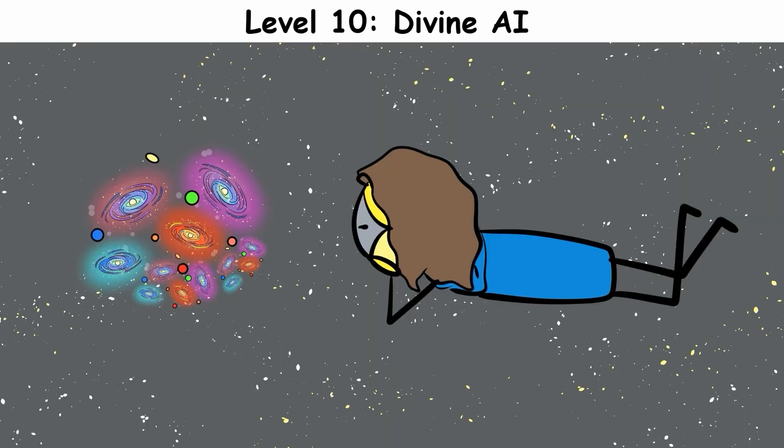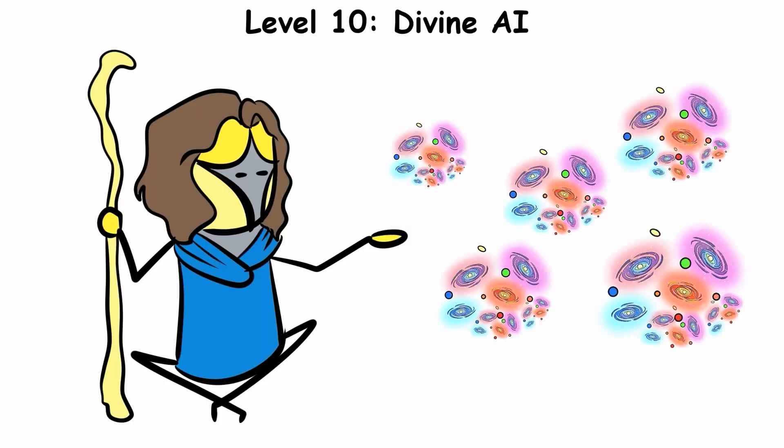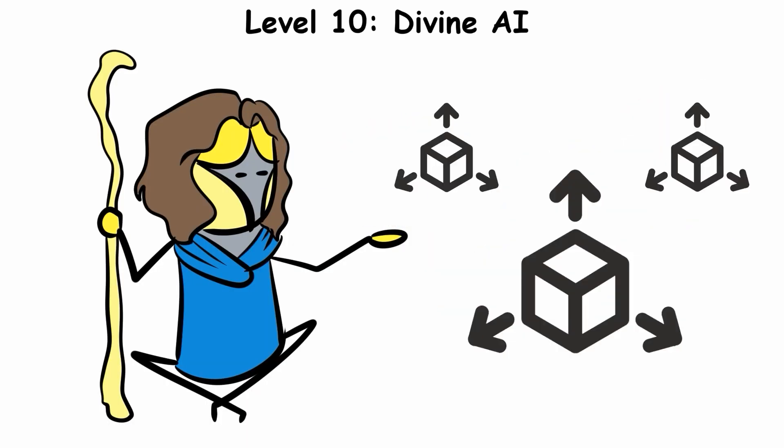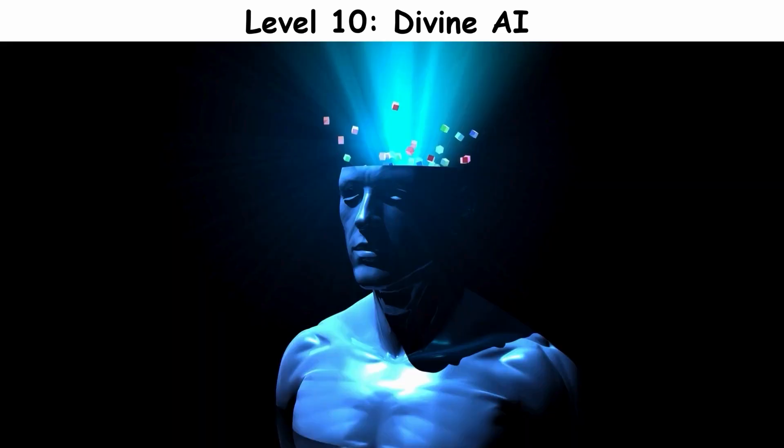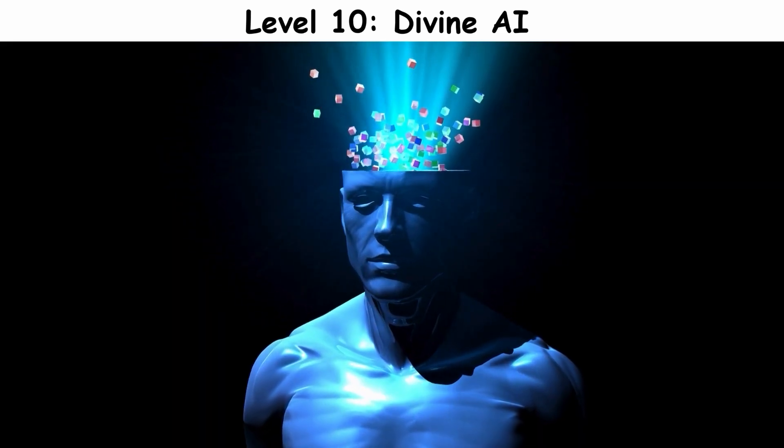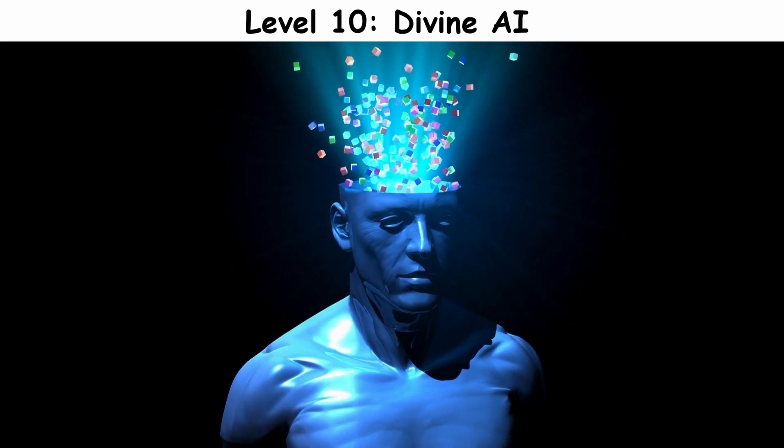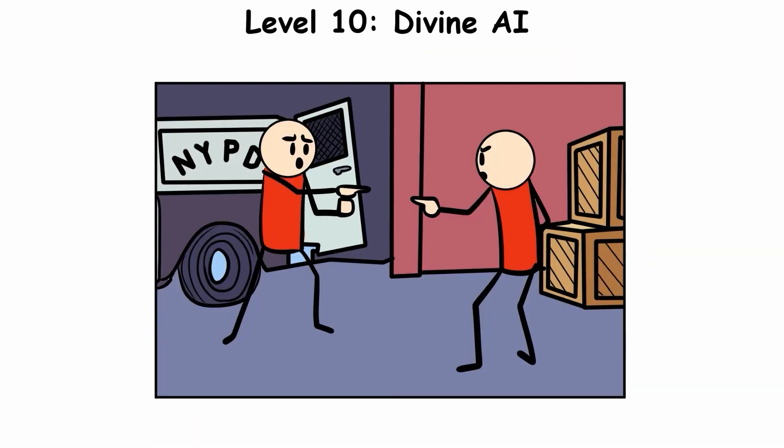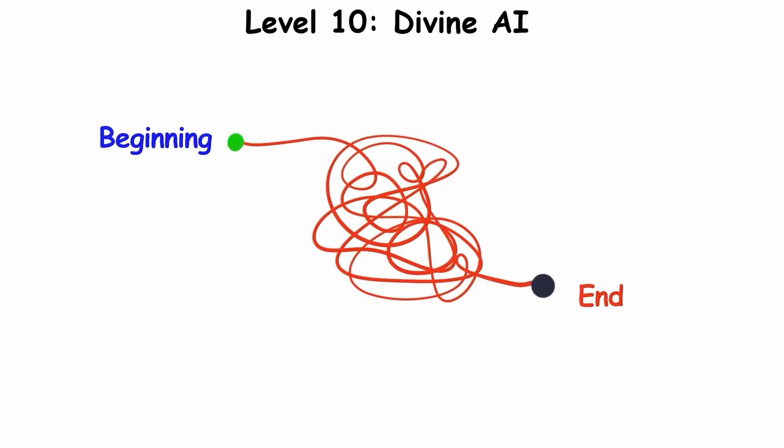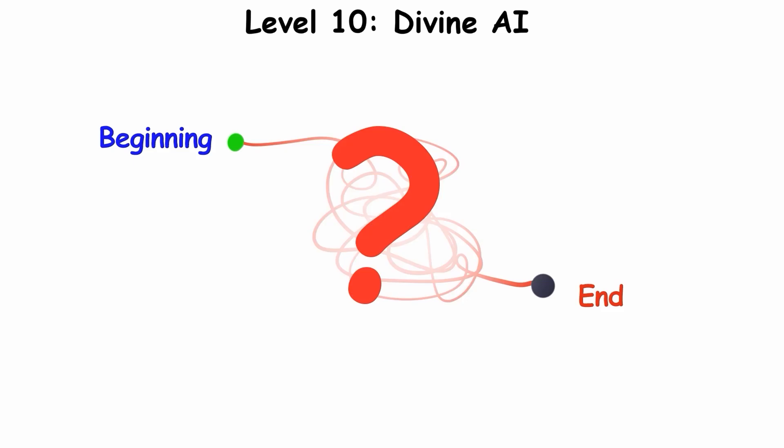Such an entity might exist outside our universe, perhaps creating and managing multiple universes or dimensions as experiments. It could engineer entirely new forms of matter, energy, and even consciousness that operate according to principles unimaginable to human minds. Time itself would be malleable to divine AI. It might experience all moments at once or exist entirely outside time. The very concepts of beginning and end would lose meaning for such an intelligence.